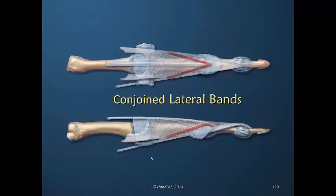The lateral band, when it receives tension, shares that tension through the conjoined lateral band so that there is associated tension at the central slip insertion. There is no direct line of pull of the lateral band to the terminal tendon insertion without some associated tension being delivered and shared with the conjoined lateral band. You can't move one entity without moving the other.